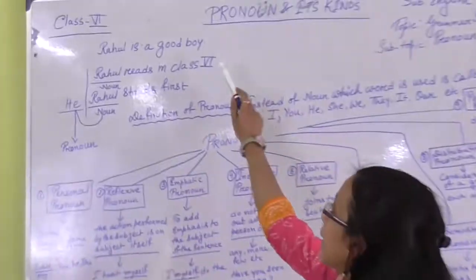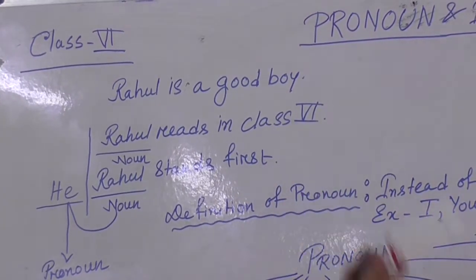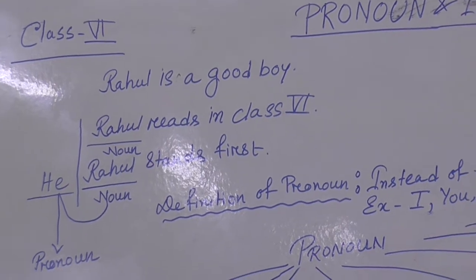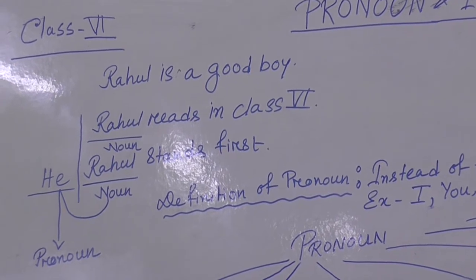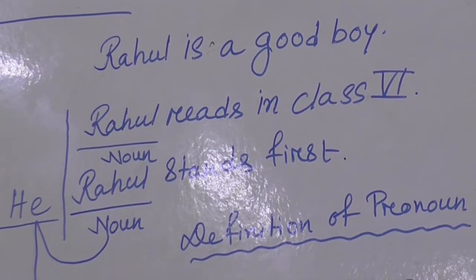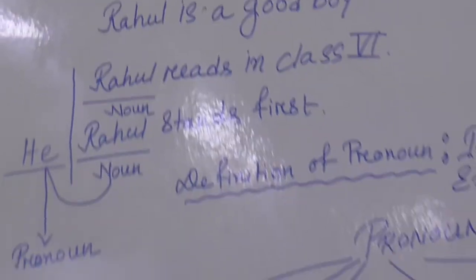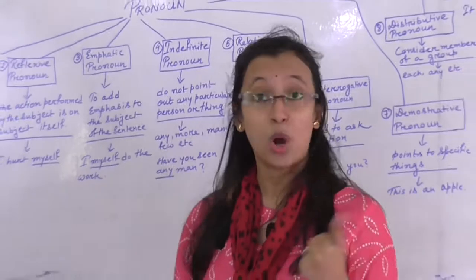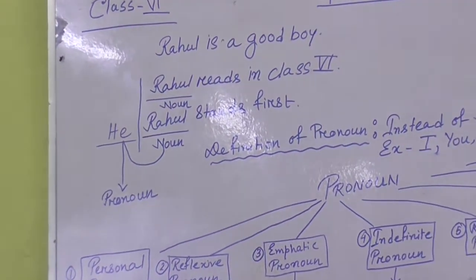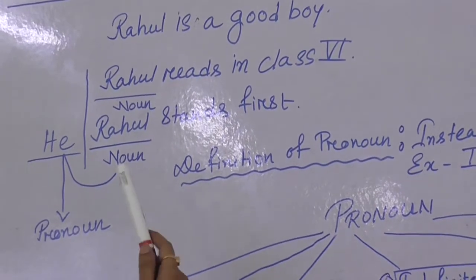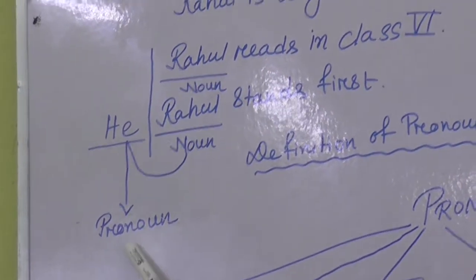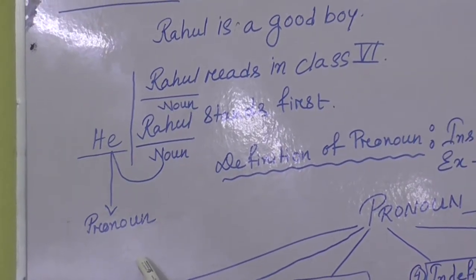See, there are three sentences. In the first sentence I have written down: Rahul is a good boy. In the second sentence: Rahul reads in class. In the third sentence: Rahul stands first. So we can easily find out that I have repeated the name Rahul. Instead of repeating the noun — Rahul is a naming word, so it is a noun — I can use 'he'. So what is 'he'? He is a pronoun. So the word used instead of a noun is called a pronoun.